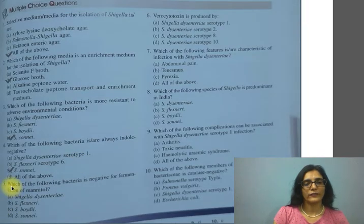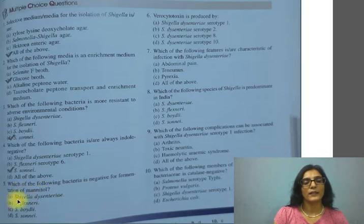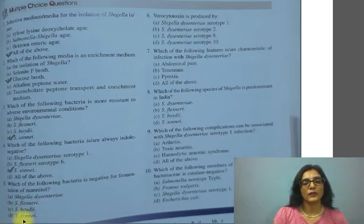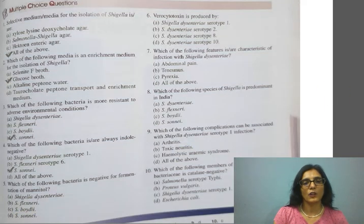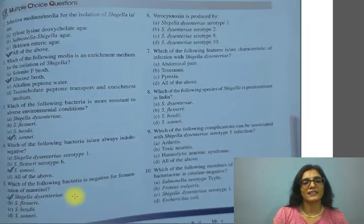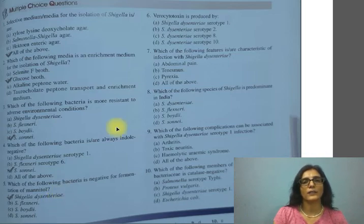Question 5: which of the following bacteria is negative for fermentation of mannitol? The options are: A) Shigella dysenteriae, B) Shigella flexneri, C) Shigella boydii, D) Shigella sonnei. The correct option is A, Shigella dysenteriae. Shigella dysenteriae is mannitol non-fermenting while all other Shigella species are mannitol fermenting.